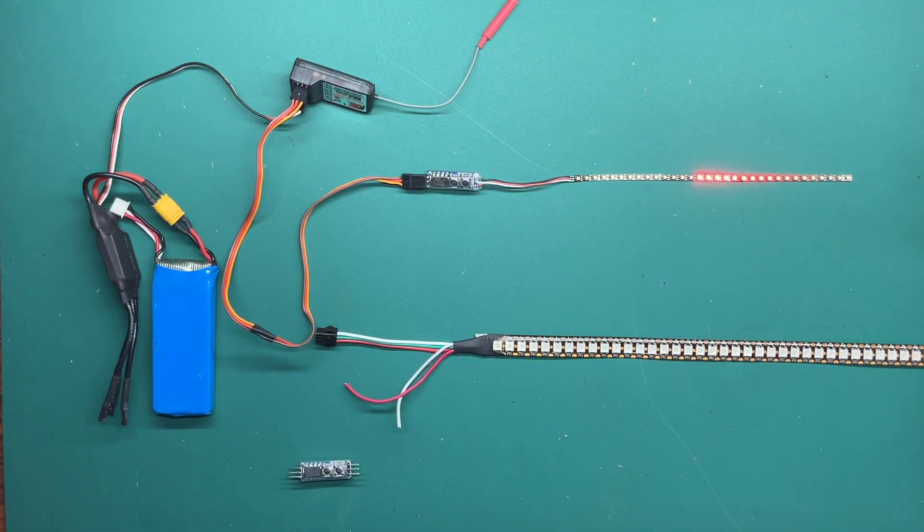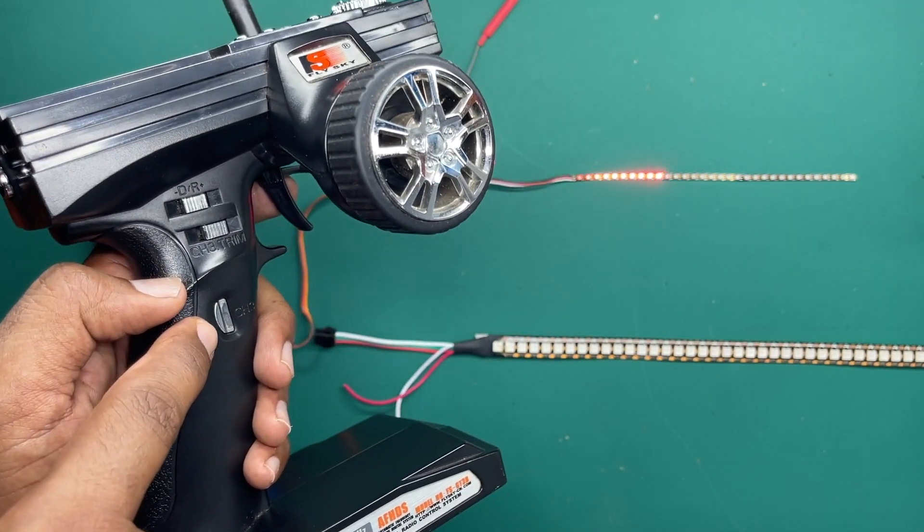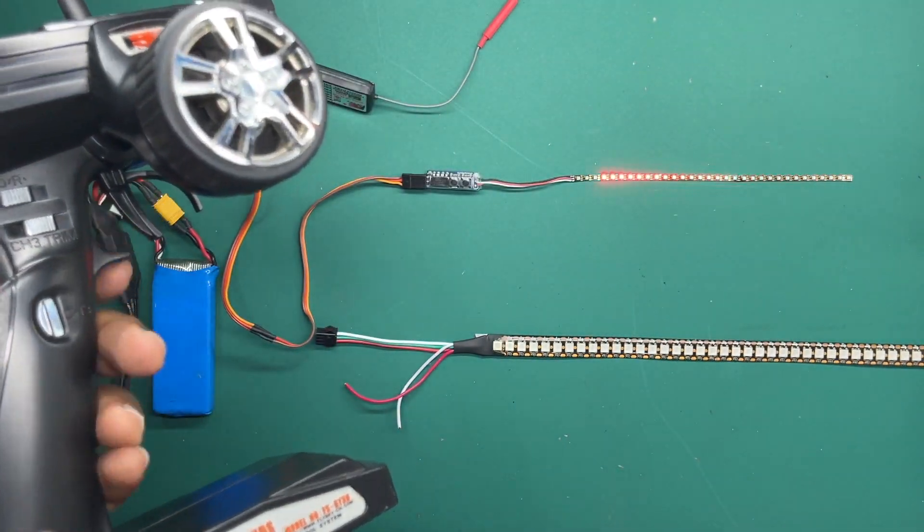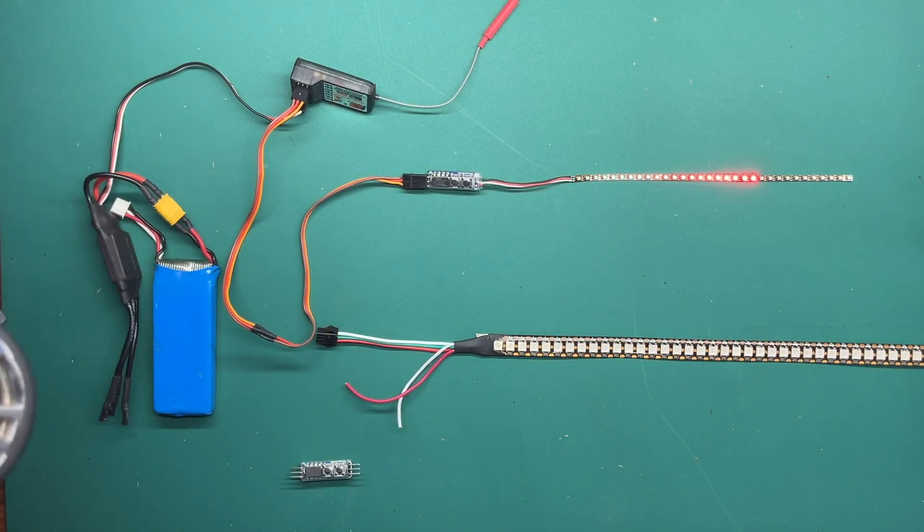So let me go through the patterns really quick. So here's the remote control and this is the channel number three. Let me turn off the light so you can look at it better.